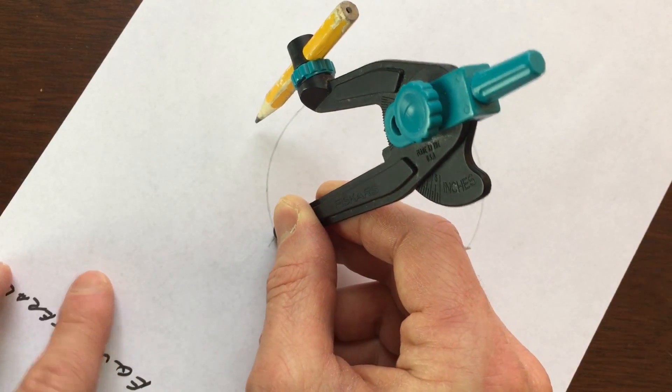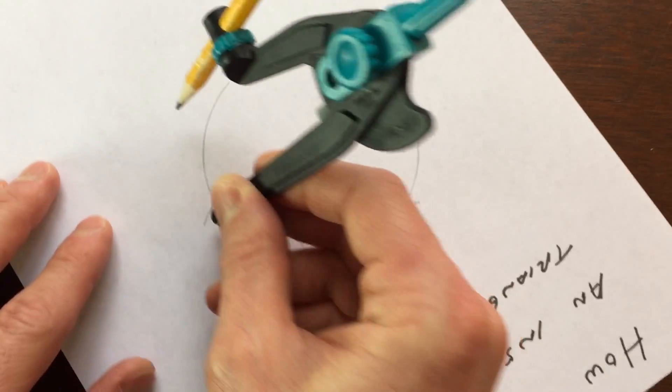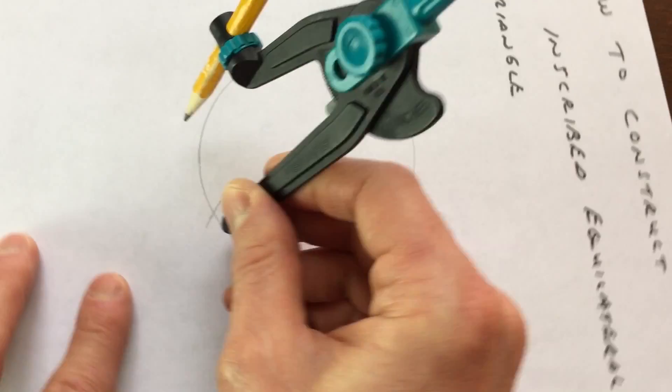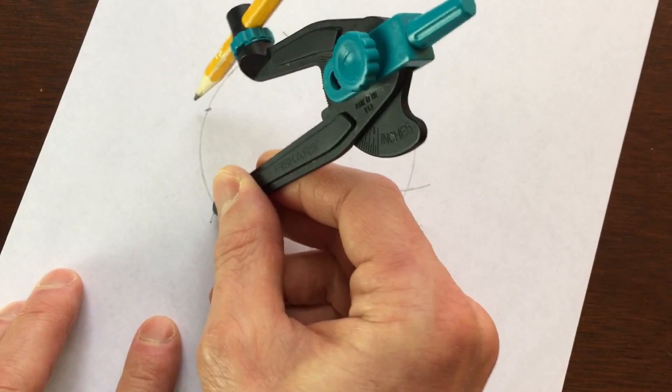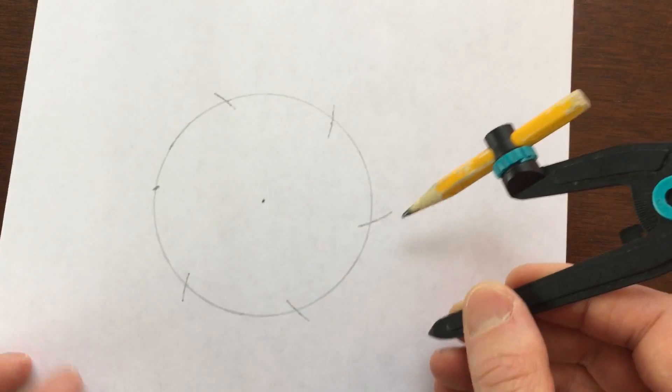If you saw the video I did on drawing a regular hexagon inscribed inside a circle, this is the same initial process that we're doing here. So we're going around the circle making these arcs. You can see I'm a little bit over on that one, but that's pretty accurate.